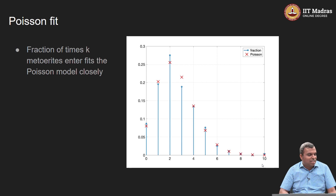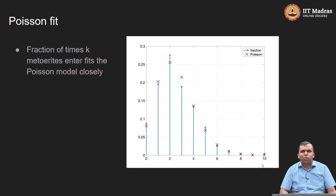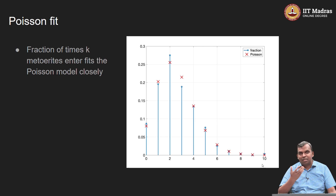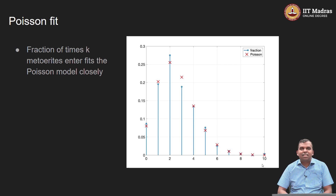Maybe statistics is not too bad after all for explaining random-like phenomena that happen in the universe. That is the conclusion of this lecture. Hopefully we will see more such examples, and for many other cases we will find nice models like this and see how we can use them in making predictions and other inferences. Thank you very much.